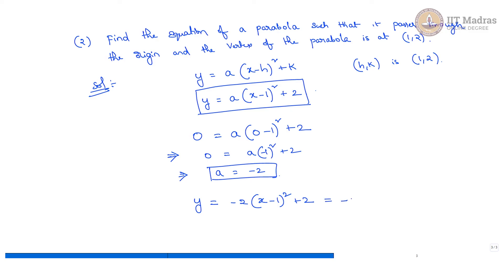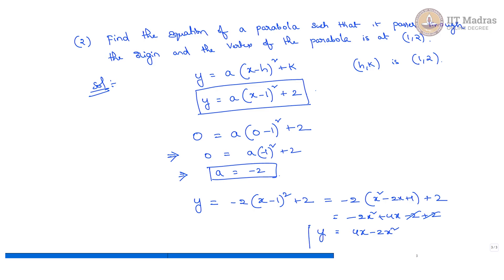If we expand it: minus 2 times x squared minus 2x plus 1, plus 2, giving minus 2x squared plus 4x minus 2 plus 2. The constants cancel, and we get y is equal to 4x minus 2x squared, which is the equation of the parabola that passes through the origin, with the vertex at 1 comma 2.